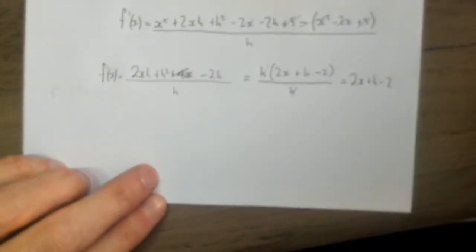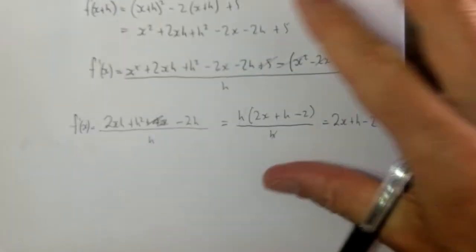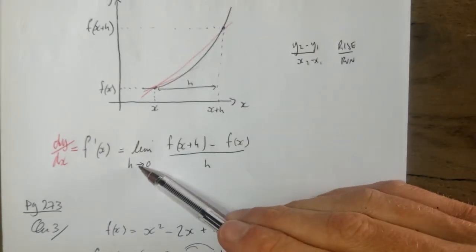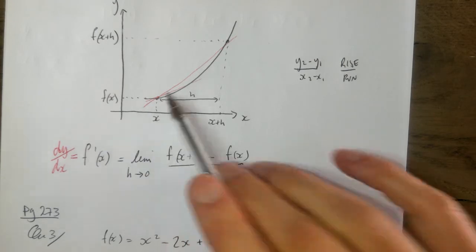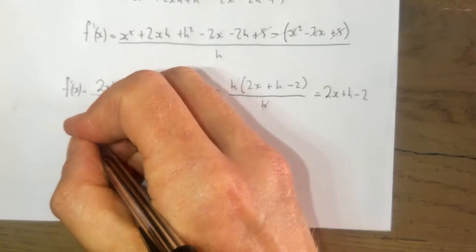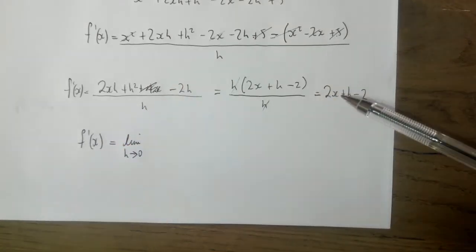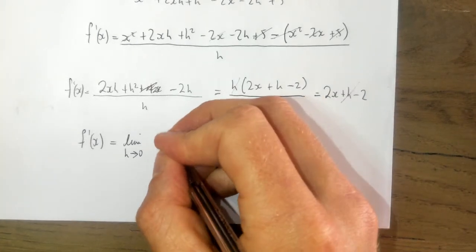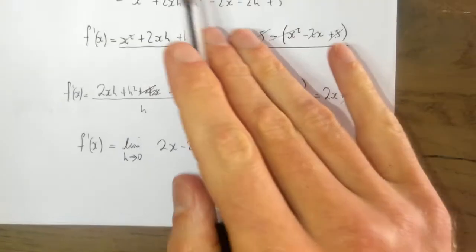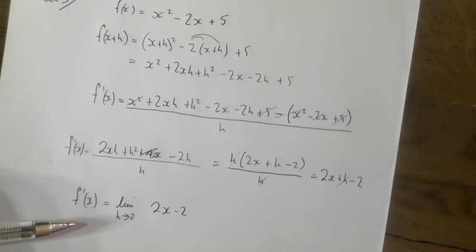So I end up with two x plus h minus two. As h approaches zero - that's what we want, because that gives us the most accurate value for the slope. As h approaches zero, the h term goes away, so f dash x equals two x minus two. This function differentiated gives me two x minus two.